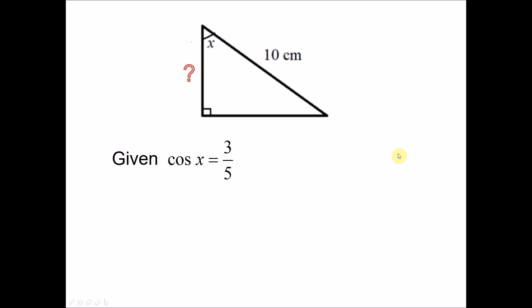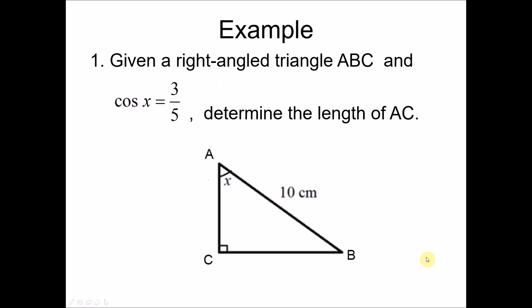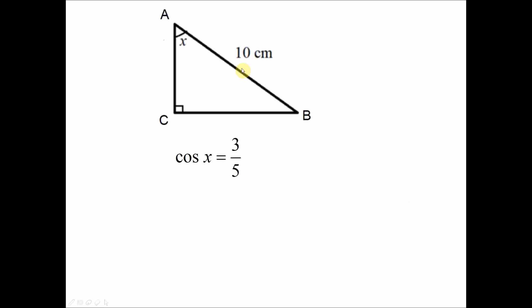We look at example number 1. Given a right angle triangle ABC where cosine x equals 3 over 5, so x is this angle and the cosine of this angle is given as 3 over 5. We want to determine the length of AC. We take all the information given and remember the formula for cosine is adjacent side over hypotenuse.